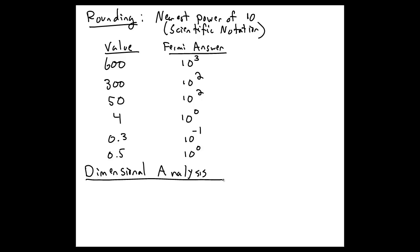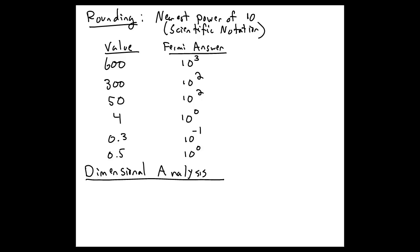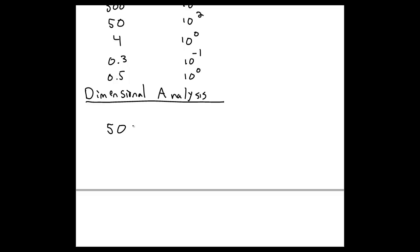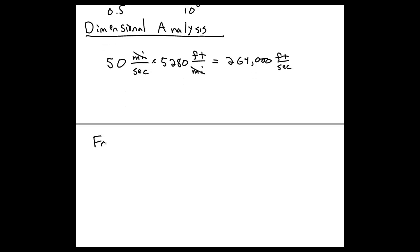The next skill is dimensional analysis. And so when we use dimensional analysis in Fermi problems, in general, what we want to do is we're just canceling out the appropriate units. So if we want to write 50 miles per second in feet per second, then we use a conversion factor, cancel out factors of miles, then we get feet per second.